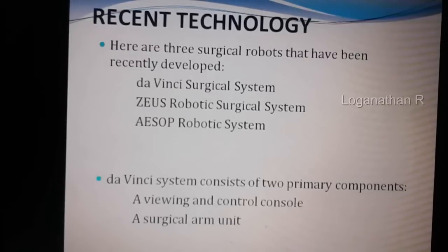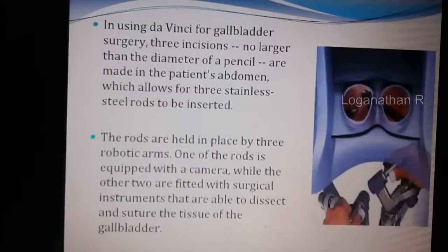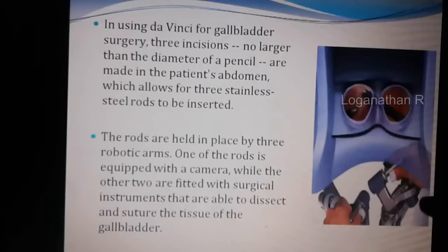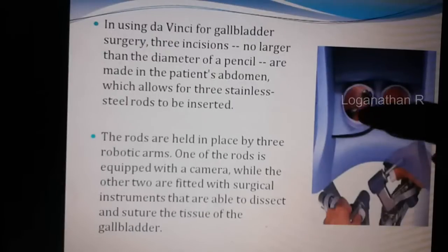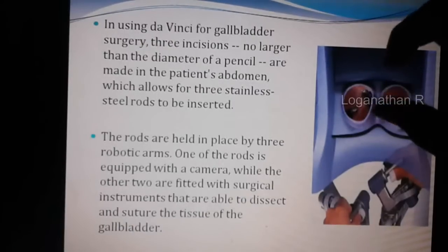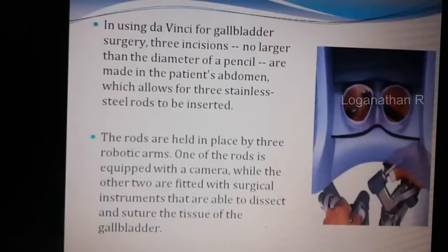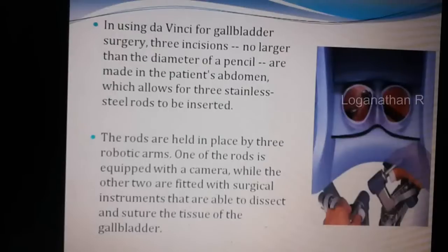In the da Vinci system, there are two primary components: the viewing and control console, and the surgical arm unit. As an example, I have taken gallbladder surgery. The robotic instruments are placed outside, and two are placed inside the body to do the operation. There are two cameras for viewing the operation for the surgeon.